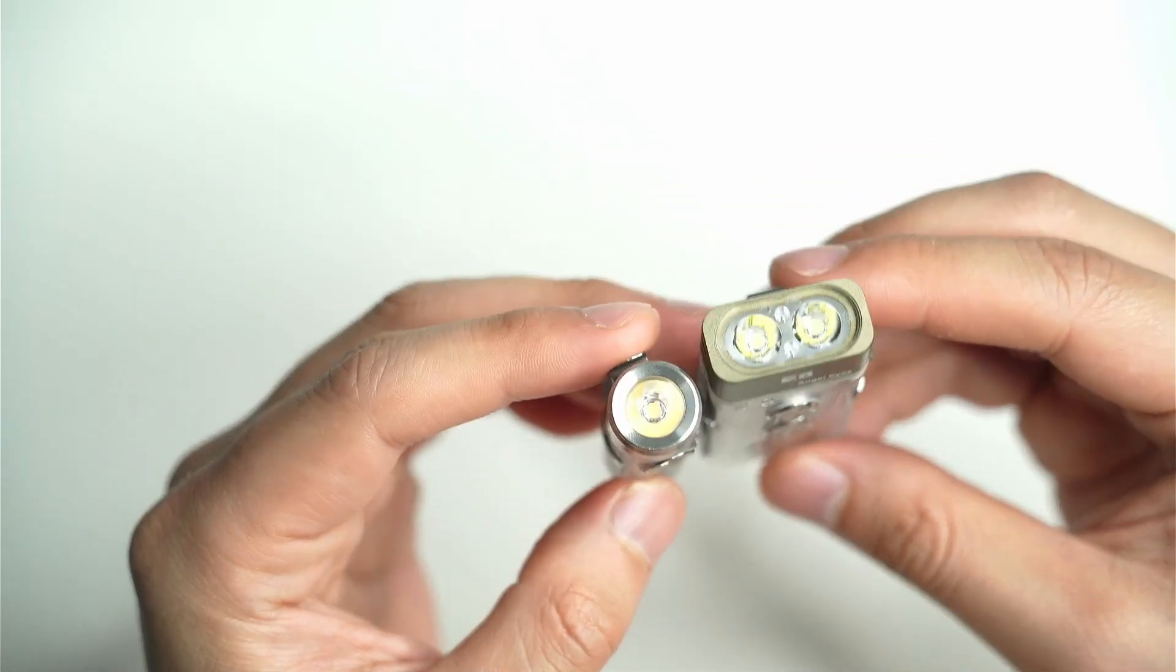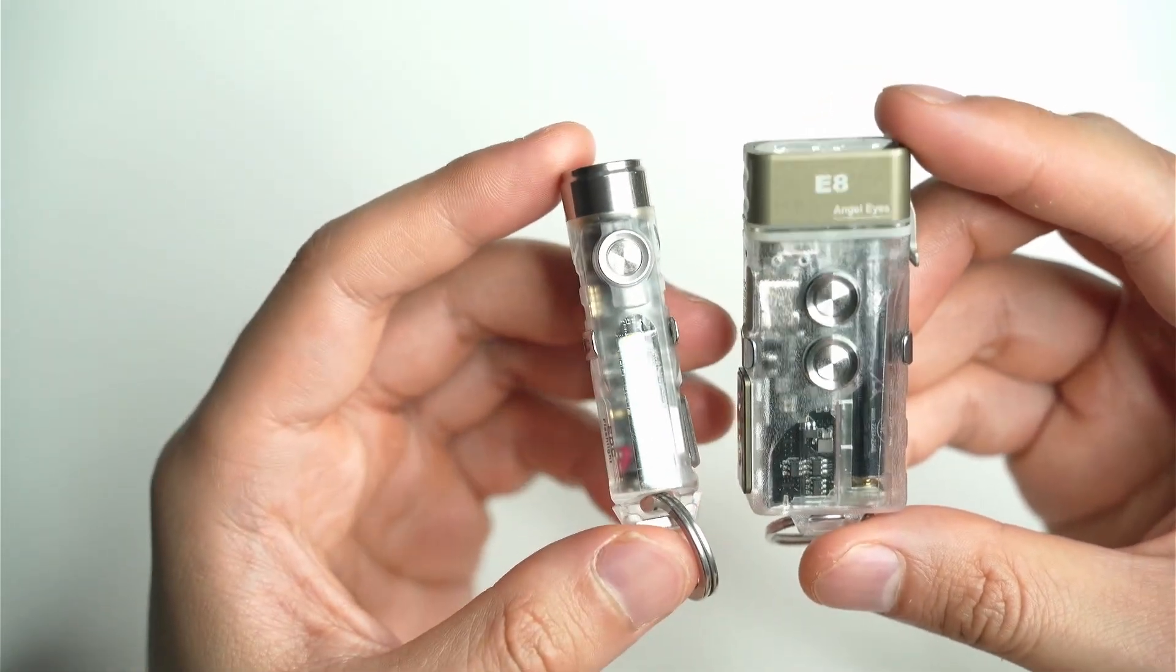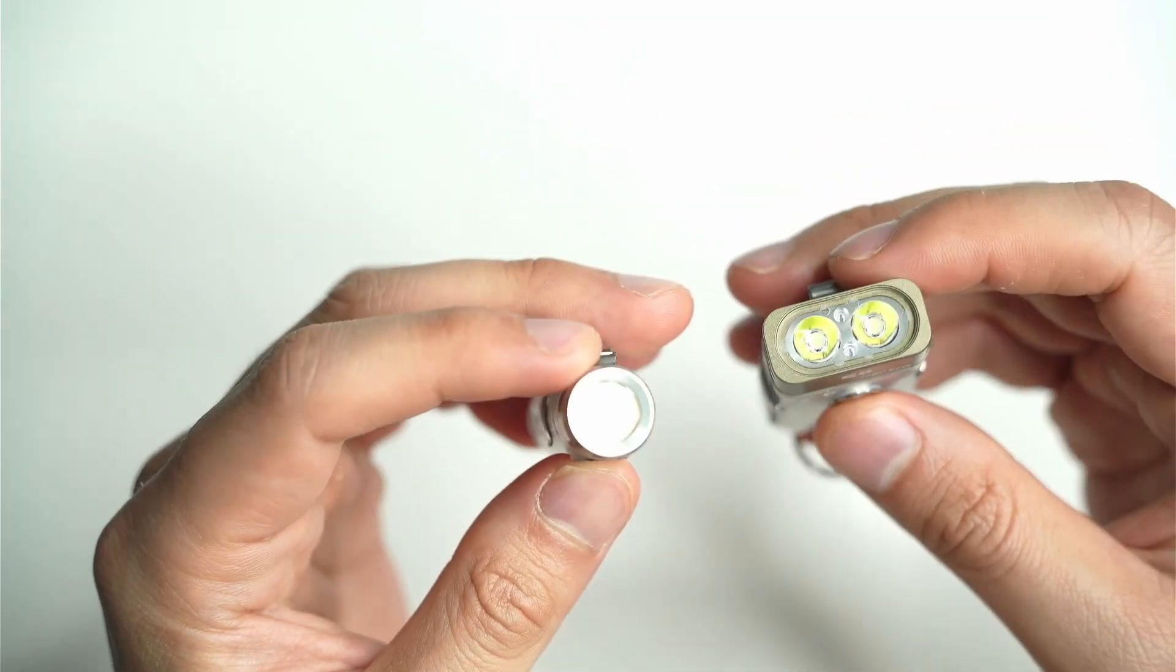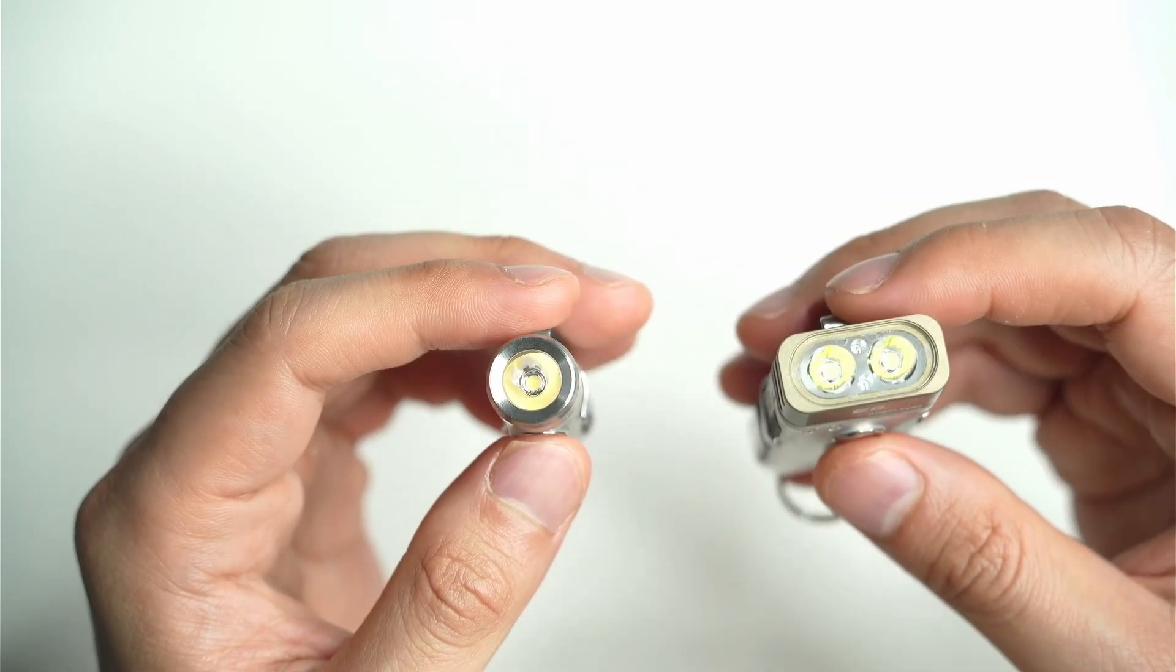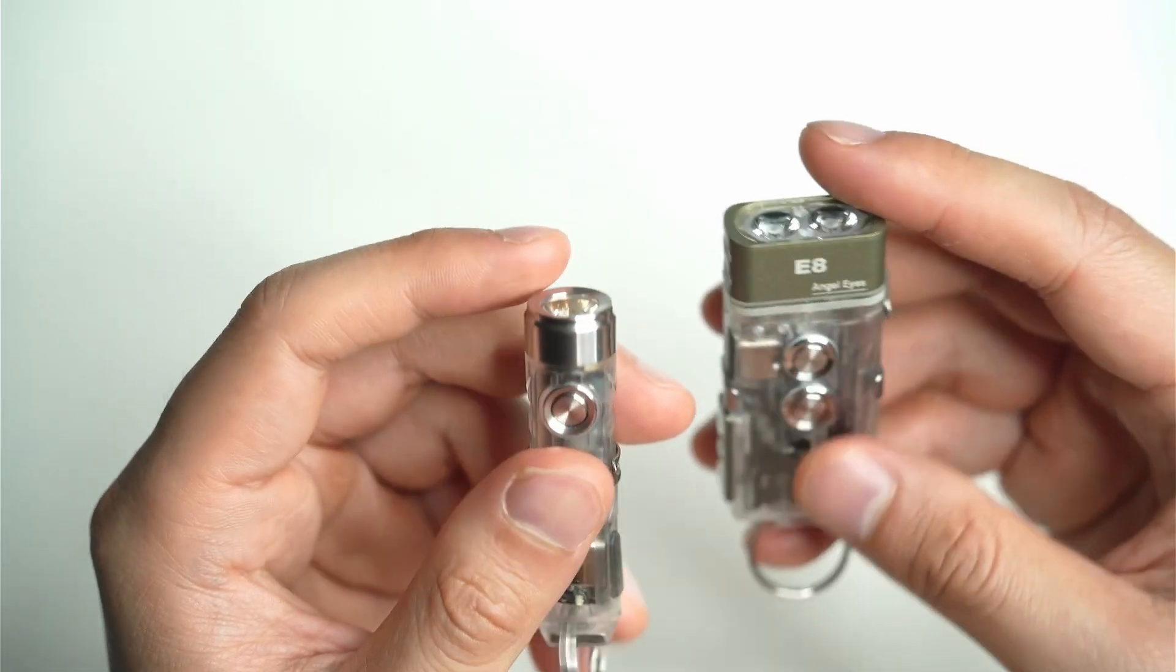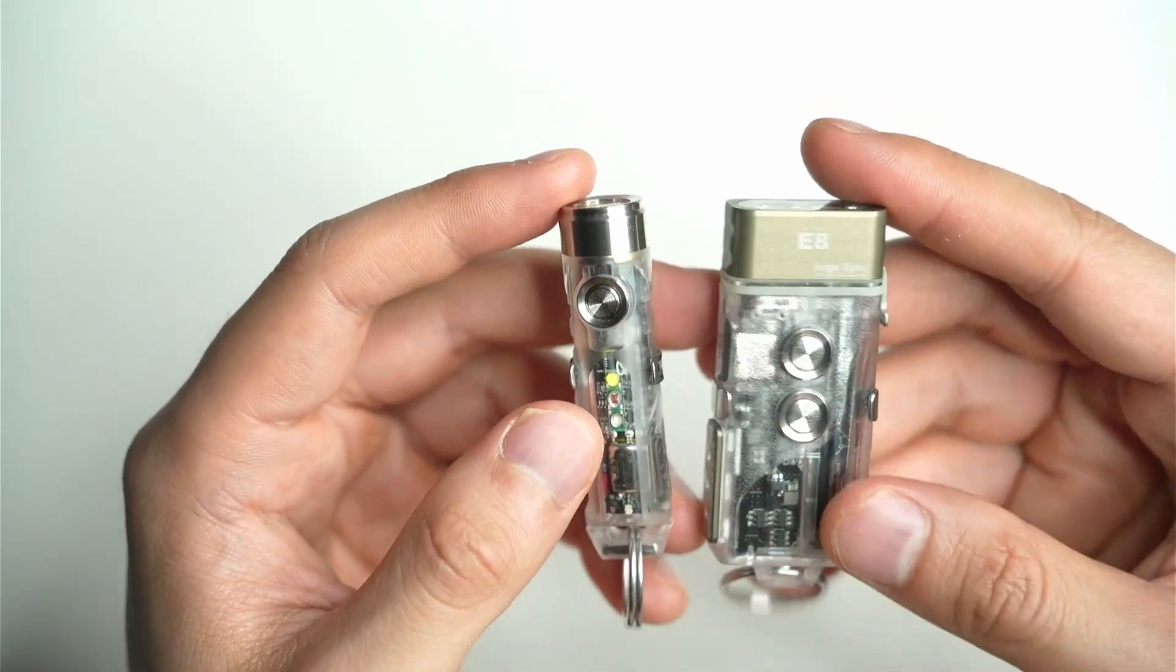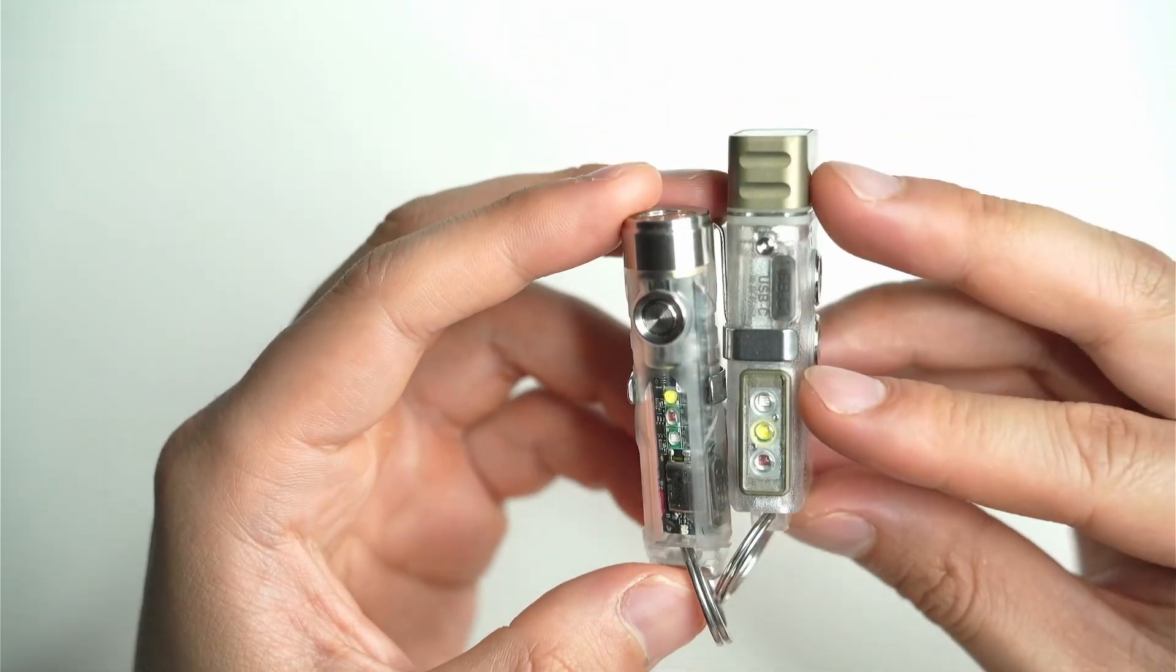The A8 is roughly half the size of the E8 but it has some very similar features. Both of them have these main LEDs out here on the front. This one produces 650 lumens, this one produces 700 lumens with the SST 20s in there.